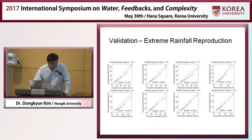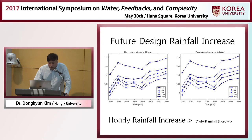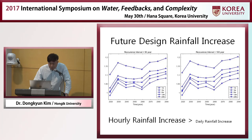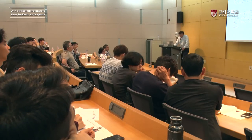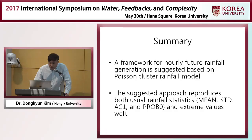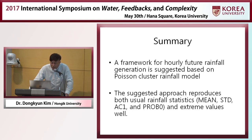This is the result for the Korean peninsula. The extreme value is also pretty well reproduced. One interesting result is that on the y-axis, the ratio of future design rainfall to current design rainfall shows that the increase in hourly rainfall is far more significant than the increase in daily rainfall. In summary, a framework for hourly future rainfall generation is suggested based on the Poisson cluster rainfall model. The suggested approach reproduces both usual rainfall statistics — mean, standard deviation, autocorrelation, and probability of zero rainfall — as well as extreme values very well. Thank you.